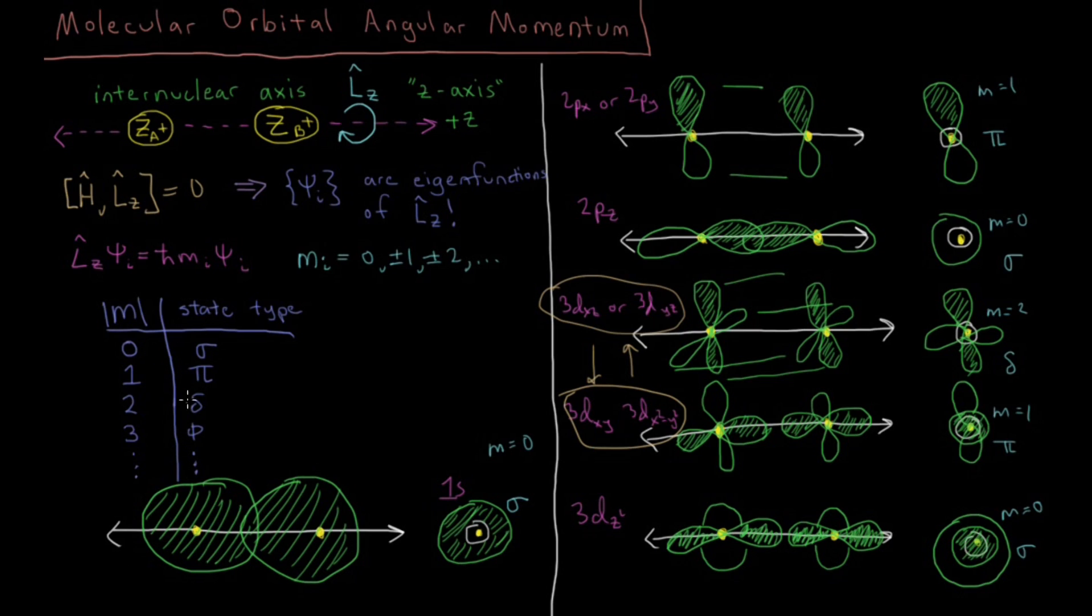This is a bit of an extension of the general type of intuition you have from general chemistry about how S orbitals and P orbitals and now even D orbitals can form sigma and pi bonds. This is the generalization of that and the mathematical origin for where those types of terms that you're familiar with come from.